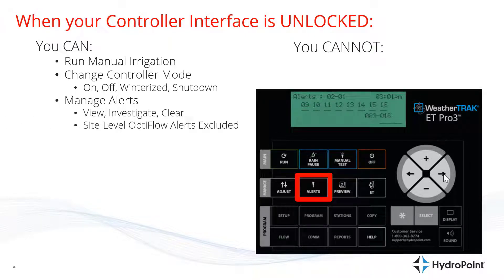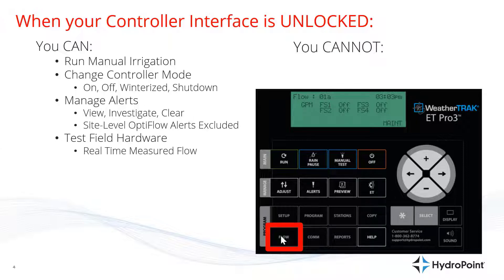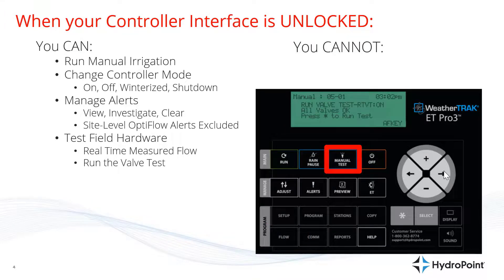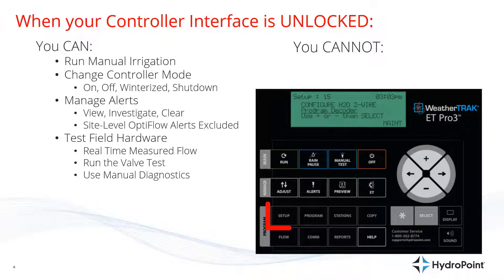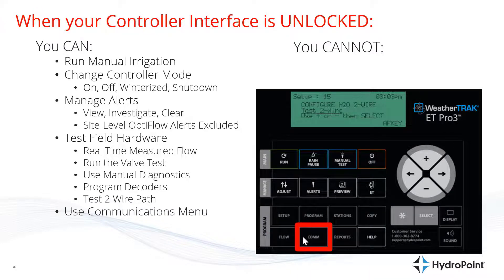Be aware that there are new site-level OptiFlow alerts that cannot be cleared from the panel. But unlocking a controller also enables all of the field testing hardware, like looking at the real-time measured flow when running stations to test the system — a very useful troubleshooting tool. You can also run the valve test and test all electrical components of your irrigation system, run manual diagnostics and see specific milliamps from station to station, and use the field hardware to do all your two-wire work like programming decoders and testing your two-wire path. Unlocking also gives you access to the full communications menu, which is useful for troubleshooting communication issues in the field.